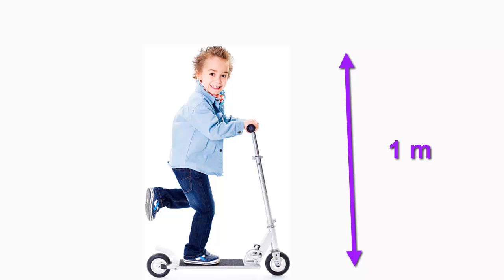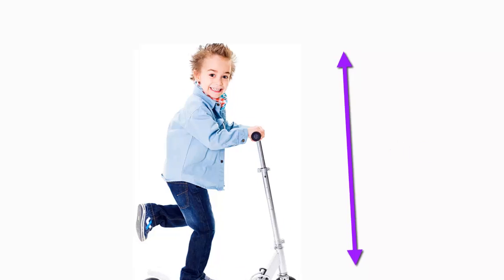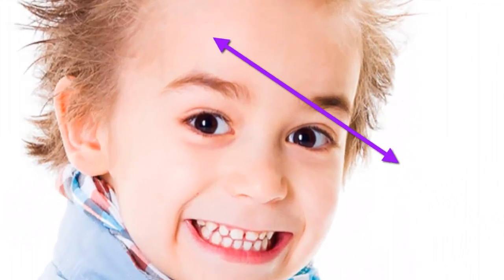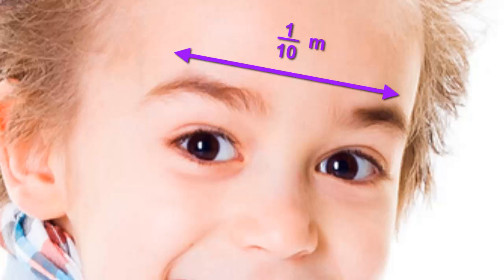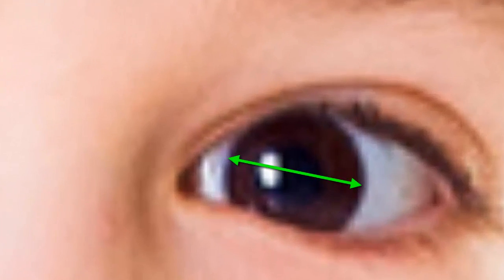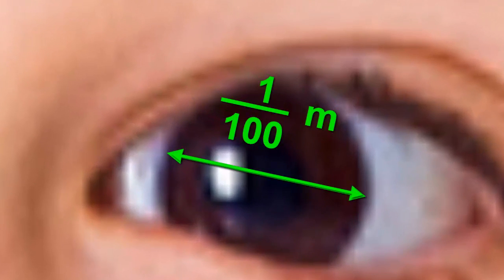Now let's find something about a tenth of Lee's size. The distance between his eyebrows is about right. Let's zoom in to magnify this by 10 so it fills up the screen. Now what's a tenth of this distance? The width of Lee's iris. That's the coloured part of his eye. His iris is a hundredth of a metre wide. A hundredth of a metre is also called a centimetre.